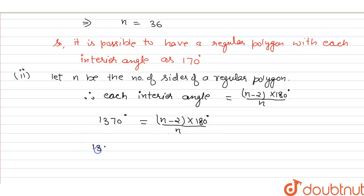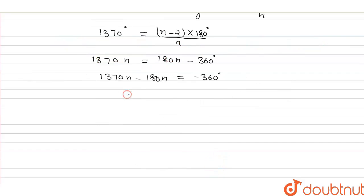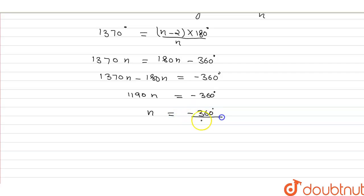After solving this, we get 1370n = 180n minus 360, which gives 1370n minus 180n = minus 360. So 1190n = minus 360, and therefore n = minus 360 upon 1190, which cannot be possible because the number of sides cannot be negative.